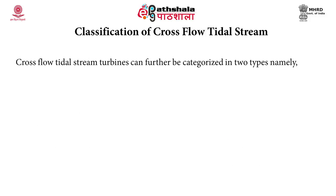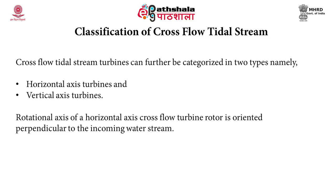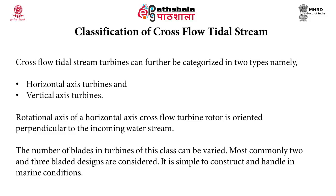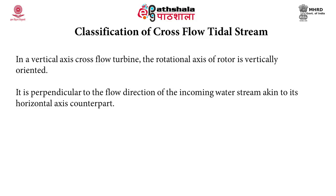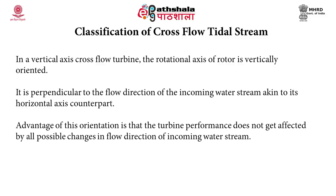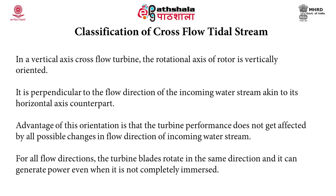Cross flow tidal stream turbines are further categorized into horizontal axis turbines and vertical axis turbines. The rotational axis of a horizontal axis cross flow turbine rotor is oriented perpendicular to the incoming water stream, and the number of blades can be varied, with two or three bladed designs being most common. In a vertical axis cross flow turbine the rotational axis of the rotor is vertically oriented and perpendicular to the flow direction. The advantage of this orientation is that turbine performance is not affected by changes in flow direction, the turbine blades rotate in the same direction for all flow directions, and it can generate power even when not completely immersed.